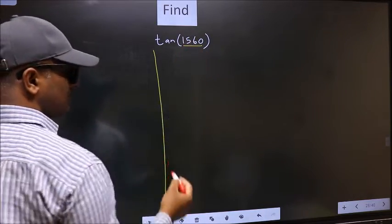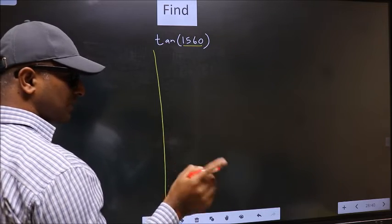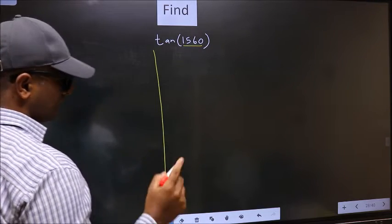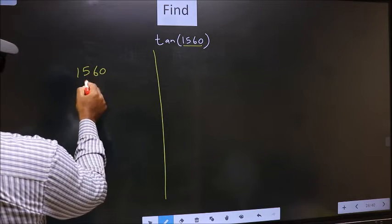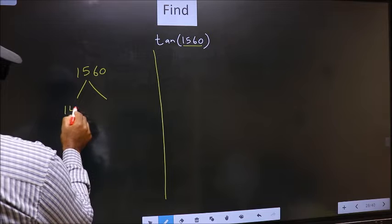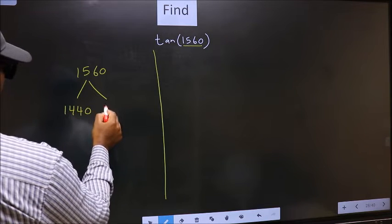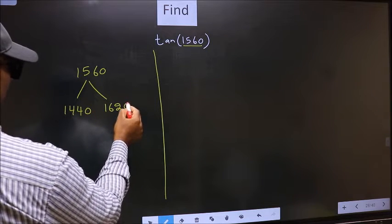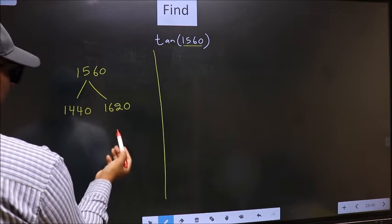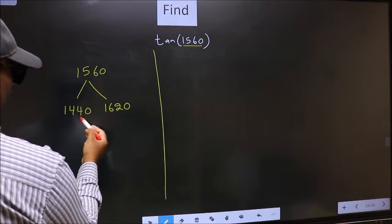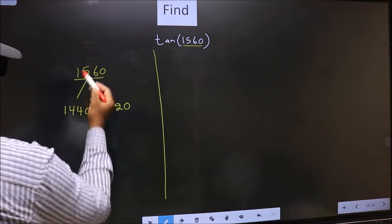Now we should check. 1560 lies between which two multiples of 180? What I mean is, 1560 lies between 1440 and 1620. This is 180 × 8 and this is 180 × 9. Between these two numbers, 1560 lies.